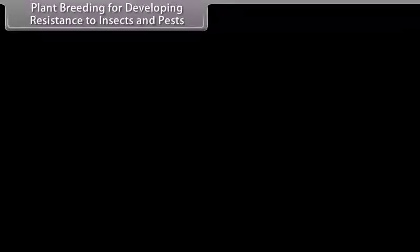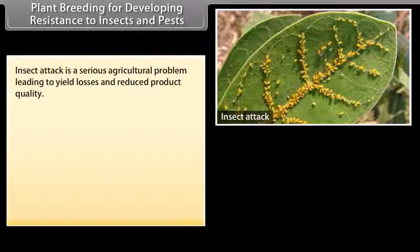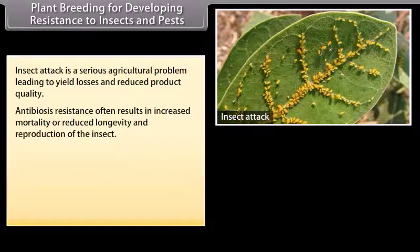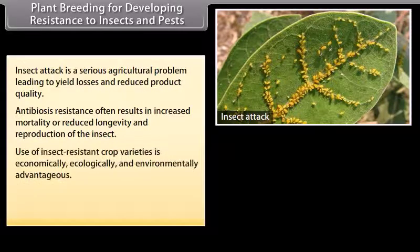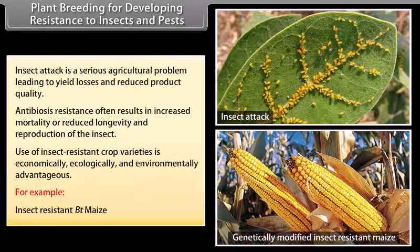Plant breeding for developing resistance to insects and pests: Insect attack is a serious agricultural problem leading to yield losses and reduced product quality. Antibiosis resistance often results in increased mortality or reduced longevity and reproduction of the insect. Use of insect resistant crop varieties is economically, ecologically, and environmentally advantageous. For example, insect resistant beet maize.